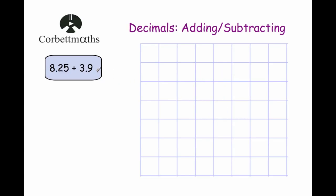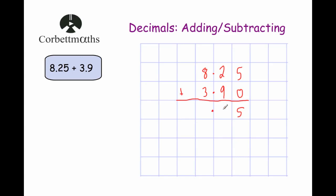Our next example is 8.25 plus 3.9. Again be very careful lining these up: 8.25 and 3.9. One number is a bit shorter — it hasn't got any digits in the hundredths column, so we put a 0 there to make the numbers the same length. Now let's add: 5 plus 0 is 5. Then 2 plus 9 is 11 — put the 1 down and carry the 1. And 8 plus 3 is 11, plus 1 is 12 — so we put 12 down. Our answer is 12.15.